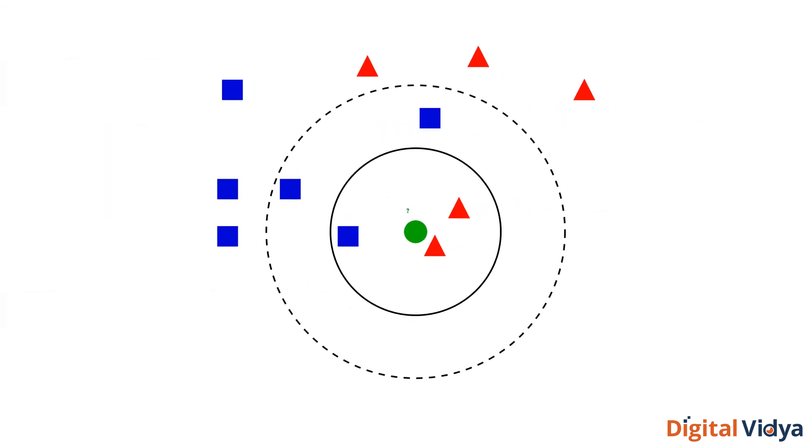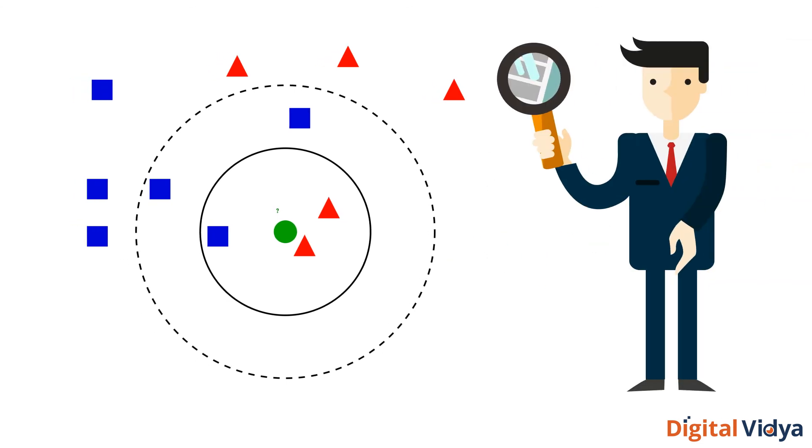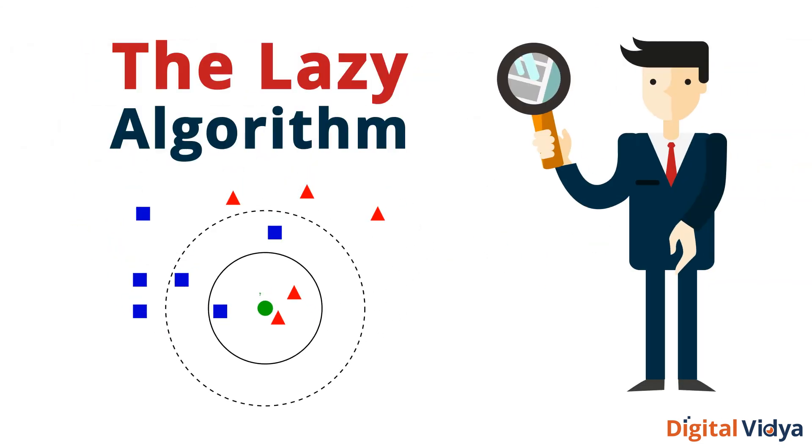K-nearest neighbors is the most easy-to-implement algorithm. As a result, many data scientists refer to it as the lazy algorithm.